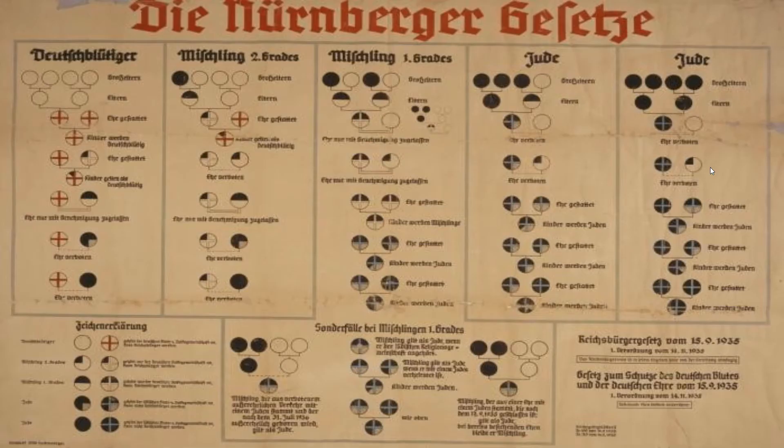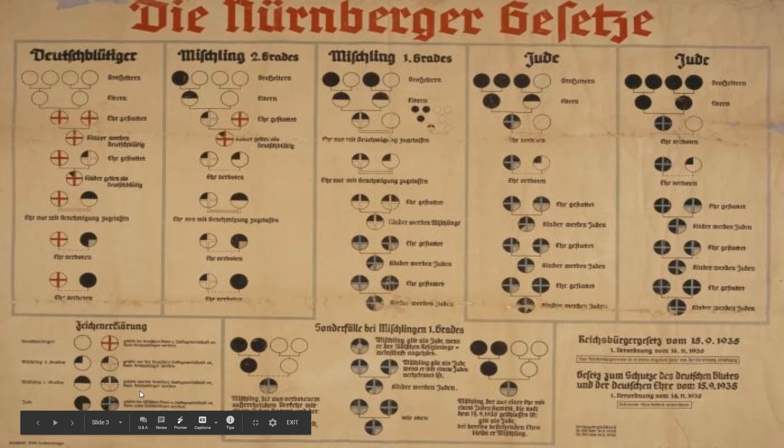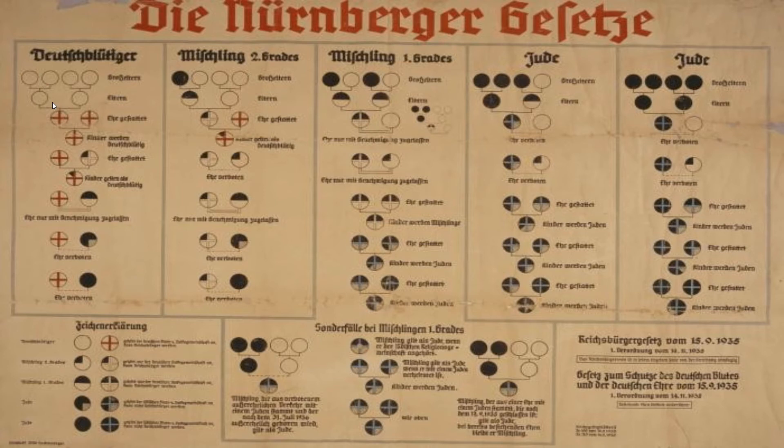This is a chart — unless you read German — telling who is considered Jewish or not. 'Jude' is the German word for Jew. A pure German, or Aryan as the Nazis called it, usually traced ancestry back to great-grandparents. As long as none of your great-grandparents were Jewish, you were considered a full-blooded German Aryan. You were still considered German if you had only one Jewish grandparent.